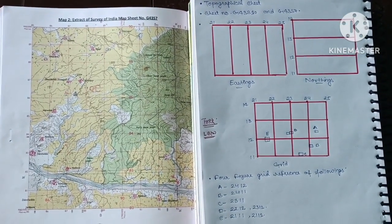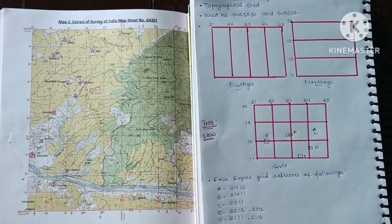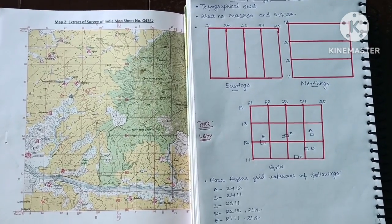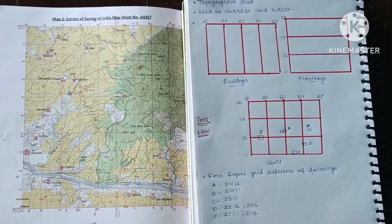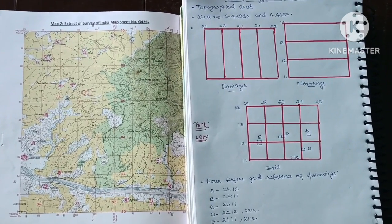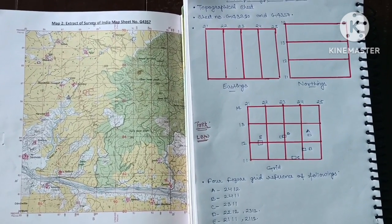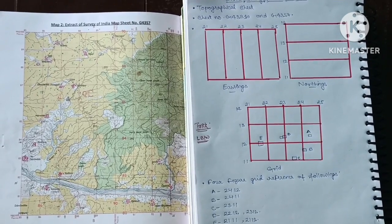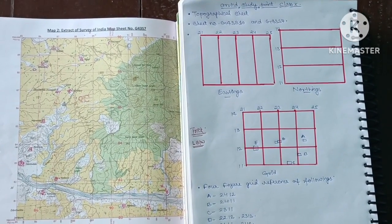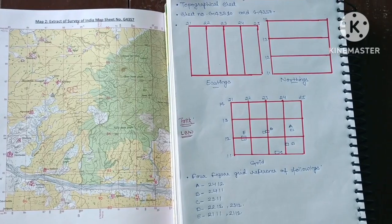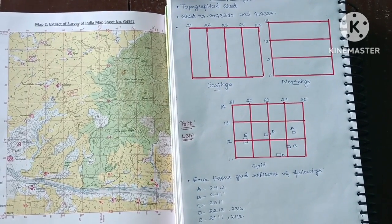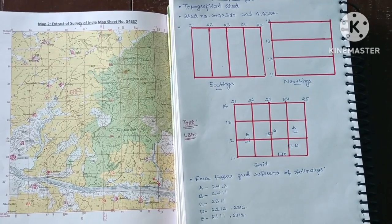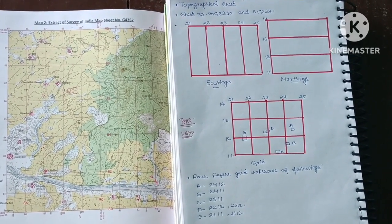We will begin with our first topic, topographical map or topographical sheets. In our syllabus, we have the extract of survey map of India, sheet number G43S10 and G43S7. We will study for the revision point, keeping in mind that you know the basic concepts. If not, then also I will try to simplify it.